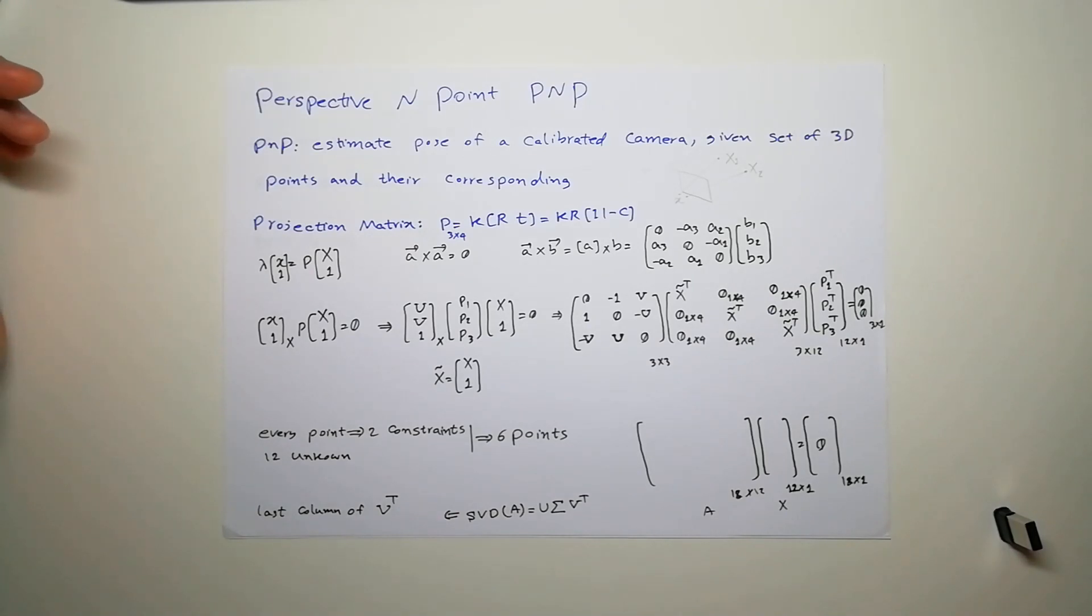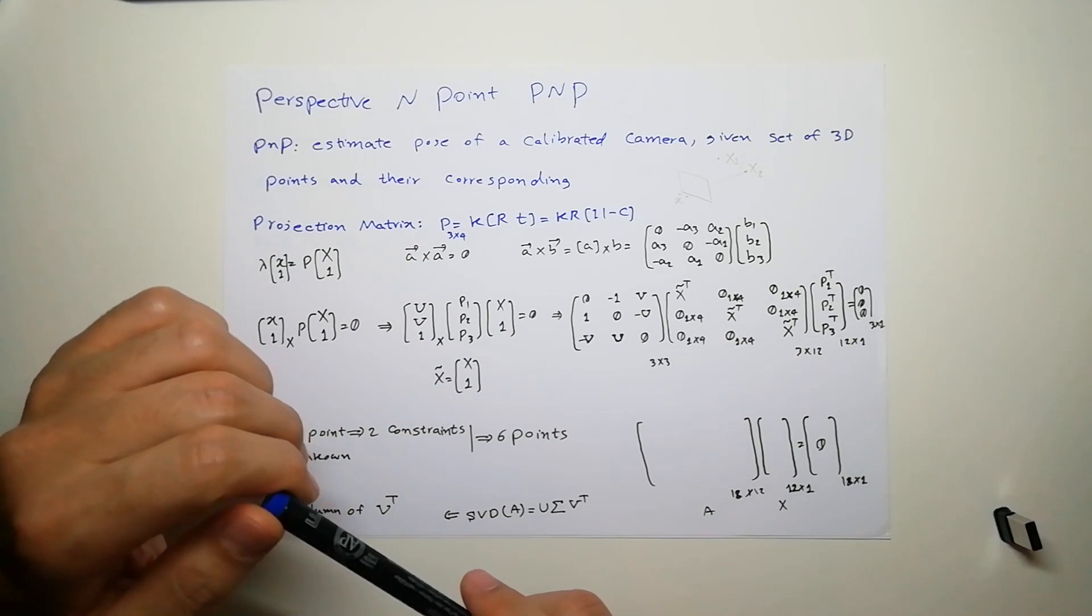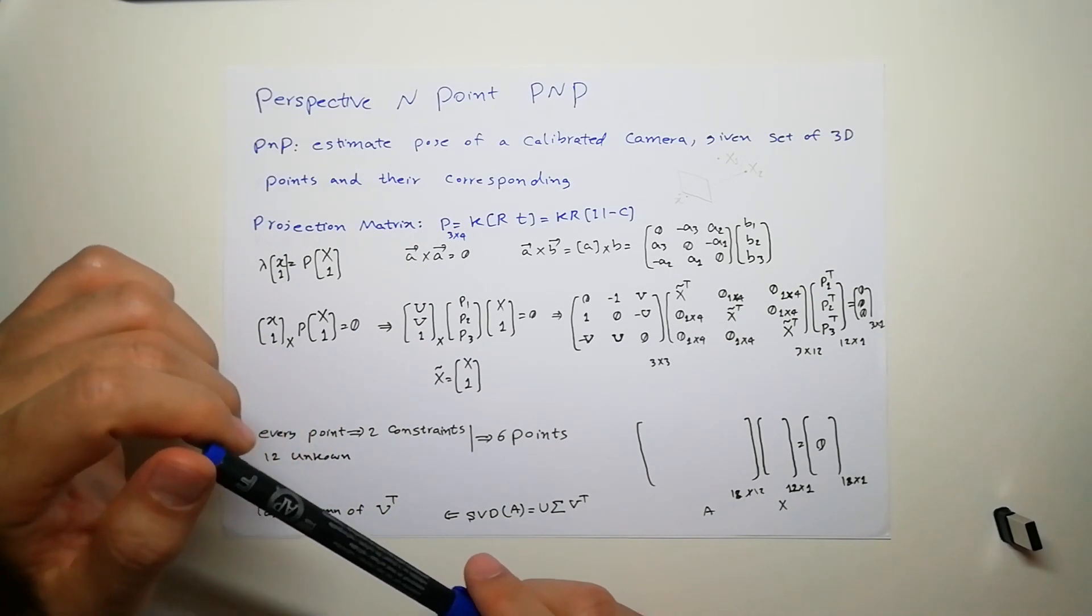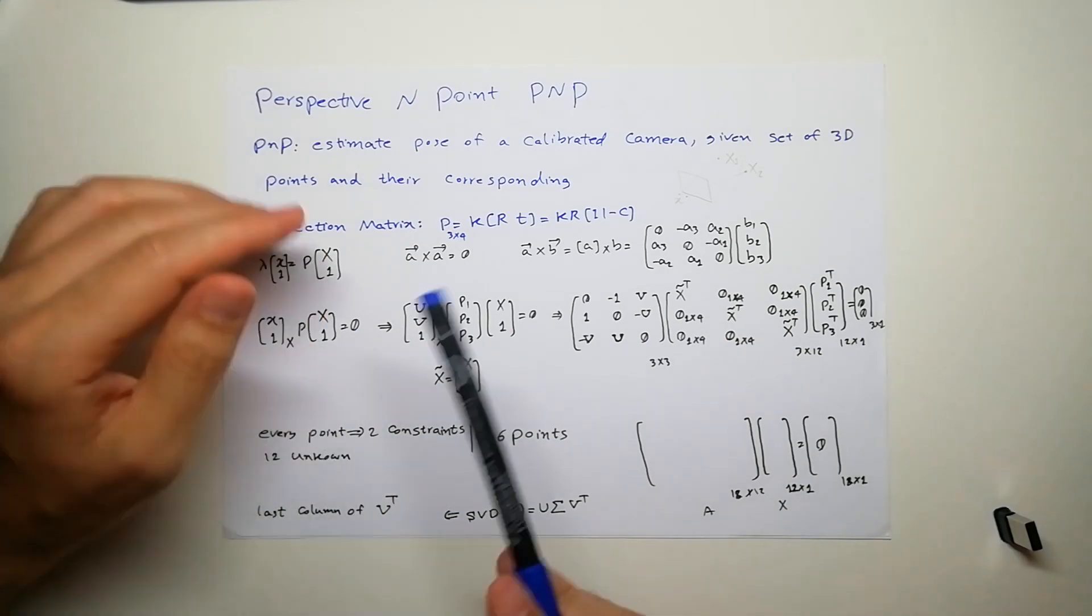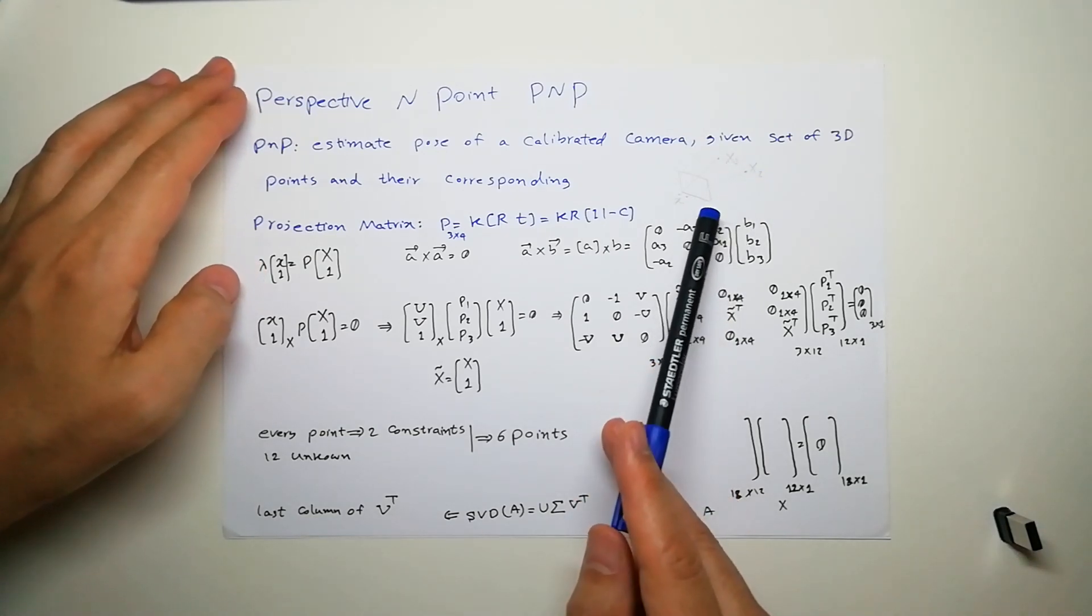In this video I'm going to talk about perspective-n-point or PnP problem. It's a problem in computer vision where you have a bunch of points and you have a calibrated camera, and you know the pose of these points.